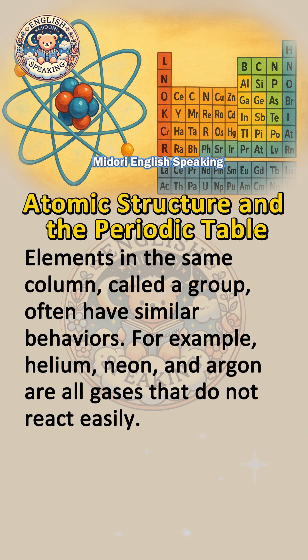Elements in the same column, called a group, often have similar behaviors. For example, helium, neon, and argon are all gases that do not react easily.